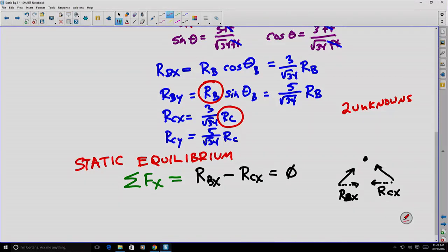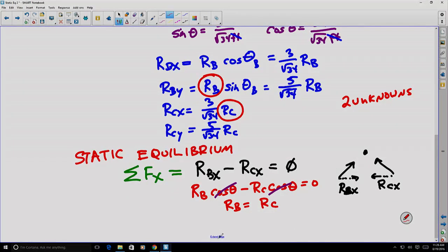Using our relationships, RBx = RB cos θ minus RC cos θ. In this case, the angles are the same, so it doesn't matter what the values are. If that equals zero, we know that RB equals RC, which we could have argued by symmetry. So now we've eliminated one of our unknowns. We don't know which either of them are, but we know they're equal.